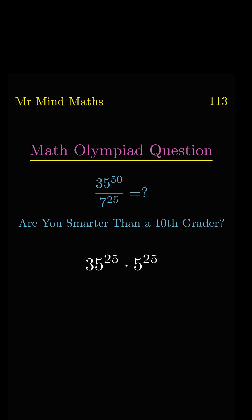Here we have two terms with the same power that are multiplied, so we can write them as one power. 35 times 5 equals 175. So finally, we get 175 to the power of 25, which is the final answer.